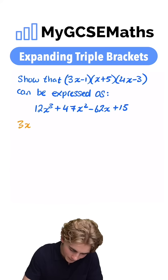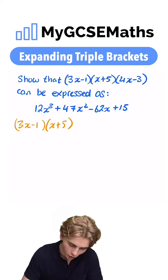First off, we're gonna have 3x minus 1 multiplied by our x plus 5. Here we're expanding double brackets, so we're going to use our FOIL method first.